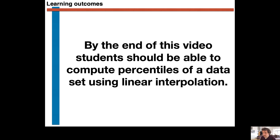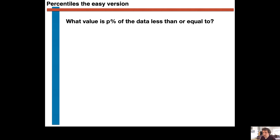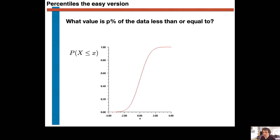With that learning outcome in mind, let's first introduce what we mean when we talk about a percentile. The pth percentile of a distribution tells us a value of x that p percent of the data is less than or equal to. If we are given the cumulative probability distribution function, these percentiles are easy to calculate. Recall that the cumulative probability distribution function tells us how the probability that the random variable is less than or equal to small x depends on small x. If we are given the cumulative probability distribution function, determining the percentile is simply a matter of dividing p by 100, then reading off the small x value that gives this particular P(X ≤ x) value, as shown here.